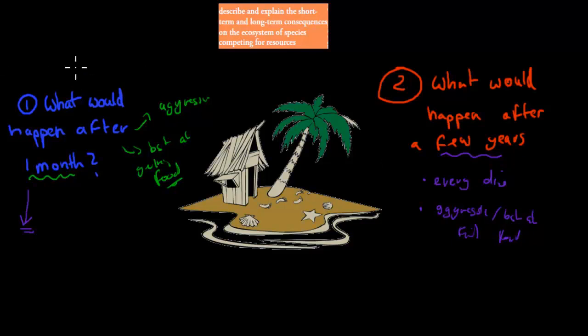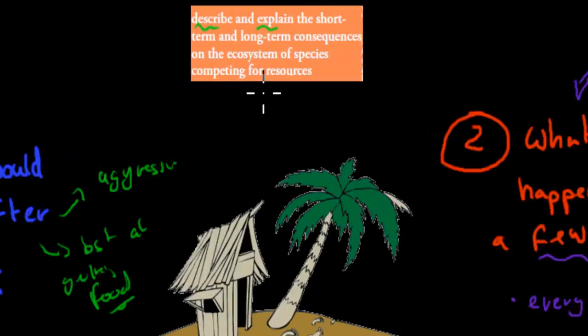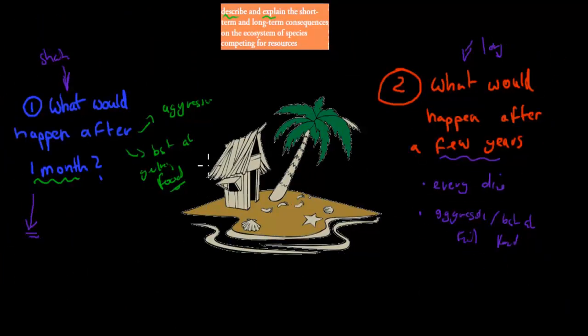First, after one month, this would be short-term, the short-term consequences. After a couple of years would be long-term. The reason I'm mentioning this is because the dot point itself says describe and explain the short-term and long-term consequences on the ecosystem of species competing for resources. So our analogy was if a group of people stuck on an island, after a month, which would be a short-term consequence, would have numbers dropping. A long-term consequence would be that some of the people might go extinct or might all die, and only the fittest will survive.